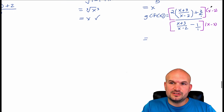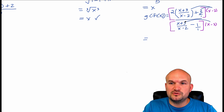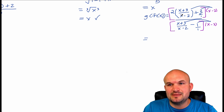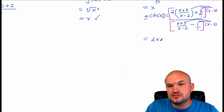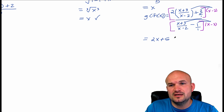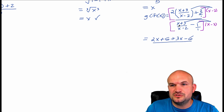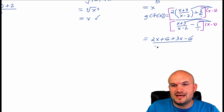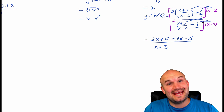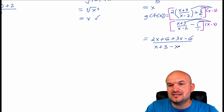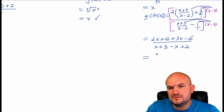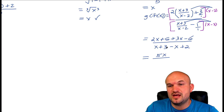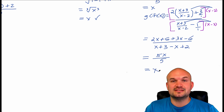When I distribute x minus 2, I multiply it to both terms since they're separated by addition and subtraction. Multiplying x minus 2 times the fraction leaves 2 times x plus 3, which distributes to 2x plus 6. Then x minus 2 times 3 gives positive 3x minus 6. In the denominator, x minus 2 times the fraction leaves x plus 3. And x minus 2 times negative 1 gives negative x plus 2. Simplifying: 2x plus 3x is 5x, 6 minus 6 is 0, x minus x is 0, and 3 plus 2 is 5. So I get 5x over 5, which simplifies to x.